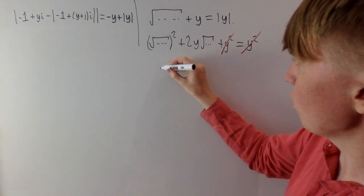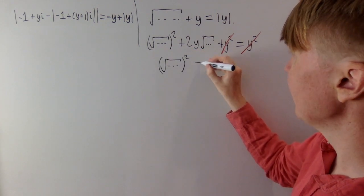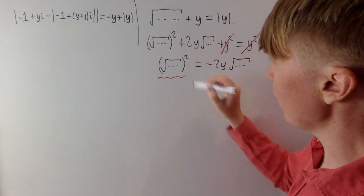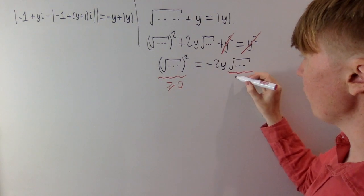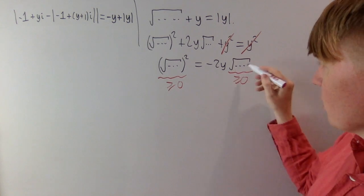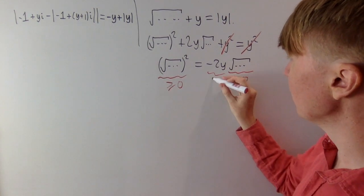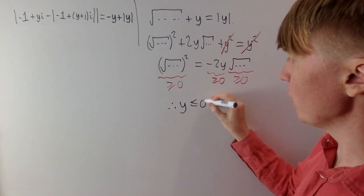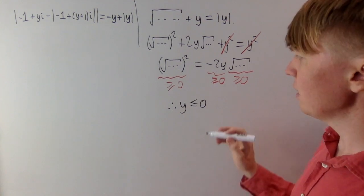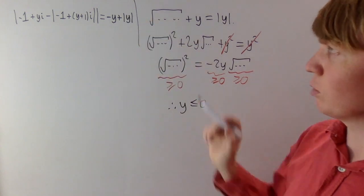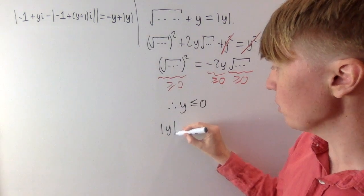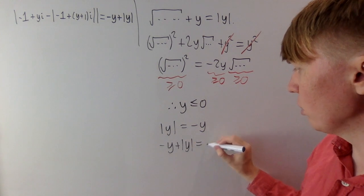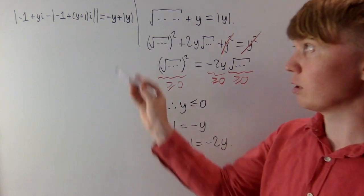Squaring gives the square root squared, plus 2y times the square root, plus y squared, equal to y squared. The two y-squared terms cancel, which is nice. Moving the 2y times the square root term over gives: the square root squared equals minus 2y times the square root. Since the left side is non-negative and so is the square root, minus 2y must be non-negative, so y must be less than or equal to zero. This lets us replace the absolute value of y with minus y, and the right-hand side becomes minus 2y.